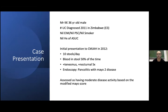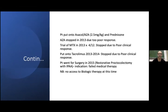He presented in Johannesburg in 2012 with the main complaint of 10 stools a day, at least half of which were bloody. He had significant tenesmus, nocturnal symptoms, and abdominal cramping. Endoscopy showed pancolitis with Mayo II disease, and he was assessed as having moderate disease activity based on the modified Mayo score. Safety bloods for azathioprine were performed; a TPMT was not found. His HEP studies were negative and he was not immune to HEP-B, so he received vaccination. He was started on asacol, azathioprine, and prednisone.